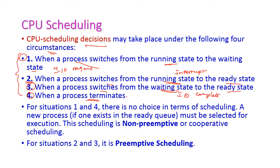In the first and fourth situations — process switches from running to waiting state due to an IO request, and process termination — we have no choice in scheduling. The process must go to the waiting state if an IO request comes, or terminate if execution is complete. There is no chance of taking any other decision; the new process simply comes to CPU execution. This is called non-preemptive scheduling.